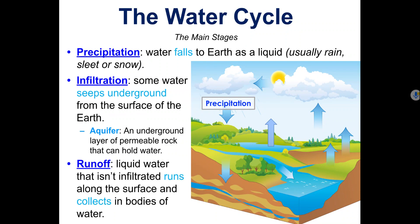Then there's runoff. Runoff occurs when liquid water that isn't infiltrated — that is, water that doesn't seep into the ground — instead runs along the surface of the Earth and collects in bodies of water. Those bodies of water could be puddles, rivers, oceans, ponds, and so forth.